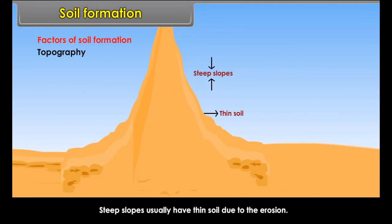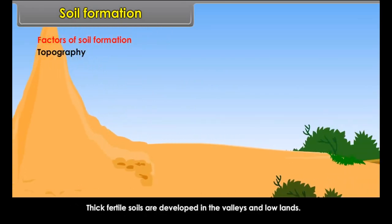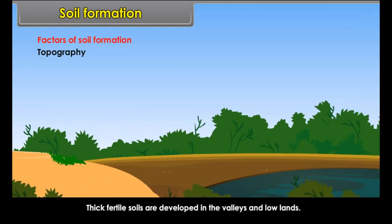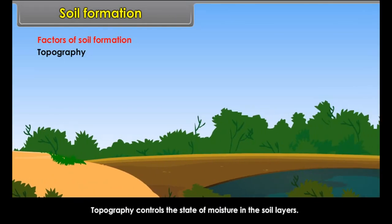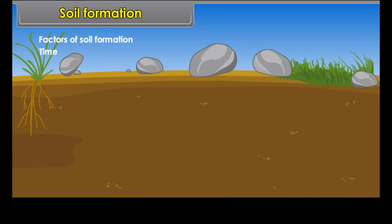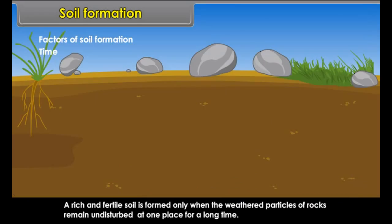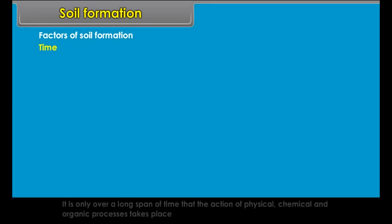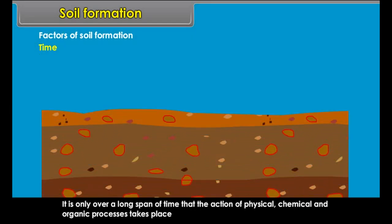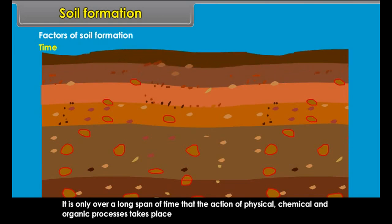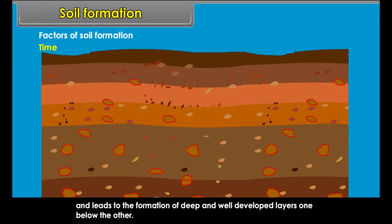The physical and chemical composition of weathered particles determines the relative proportions of different minerals in the soil layer. Topography of a region also affects the formation of soils — steep slopes usually have thin soil due to erosion, while thick fertile soils develop in valleys and low lands. Topography controls the state of moisture in the soil layers.